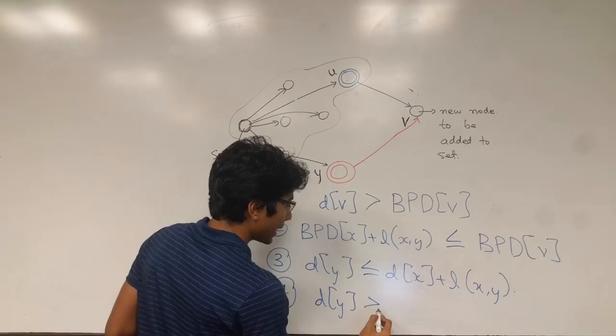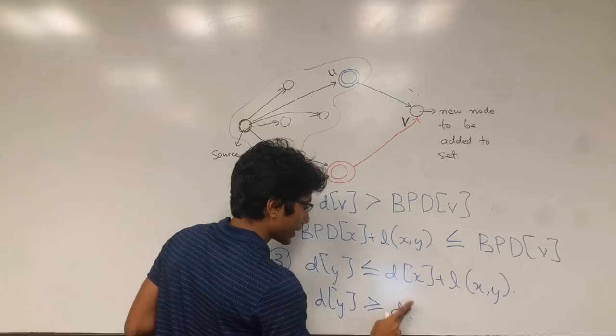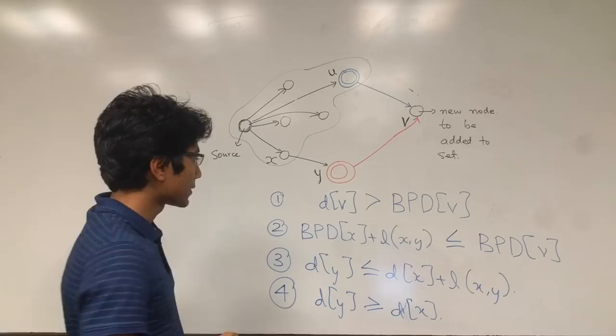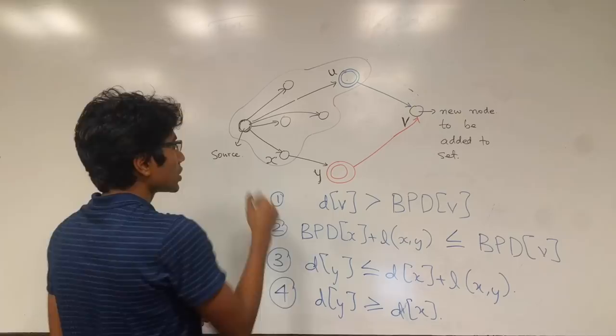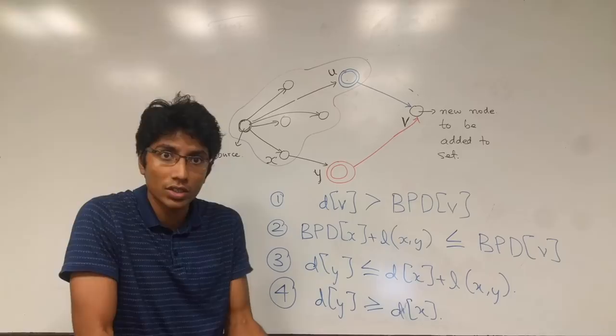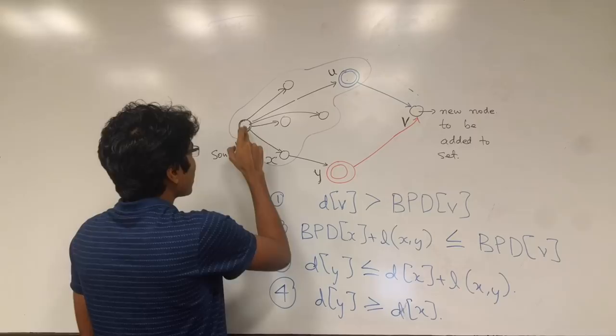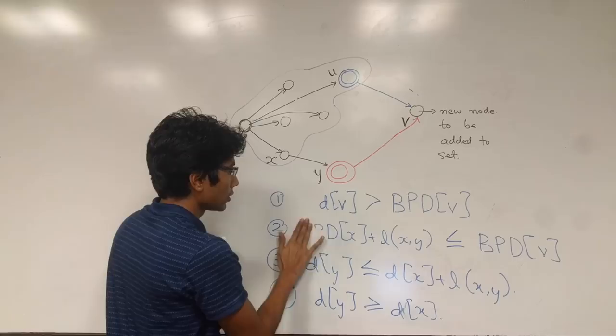And that's the fourth condition. Now let's try to simplify things. What is the best possible distance to x? Well, because we are using the assumption step where everything in the set at this given point of time is the shortest distance from the source—that is the assumption step—it means that the distance to x is the shortest, is the best possible distance. So d of x plus this is equal to best possible to v.